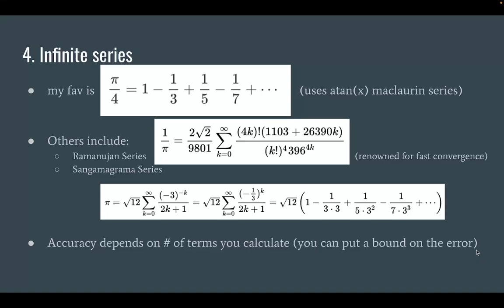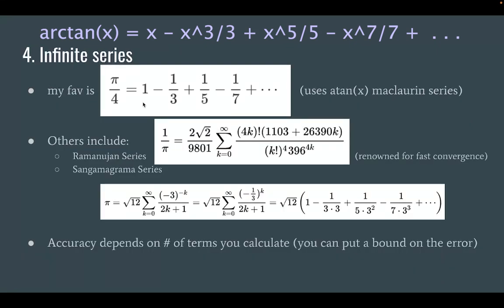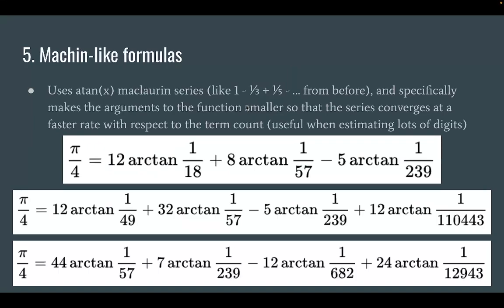And then the last one is Machin-like formulas, which uses the atan of x McLaren series, which is not written here, but the McLaren series is like x minus x to the third over 3 plus x to the fifth over 5. And it specifically tries to make the arguments to the function smaller so that it converges faster. Because earlier we had this one right here, which was based on it, but it was very slow because the argument to the function is very large. It was like 1. But here, if we make the argument 1 8th or 1 57th, or even down here, 1 out of 239, then it's going to converge a lot faster.